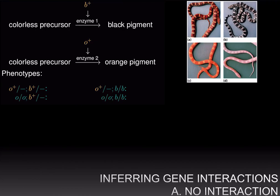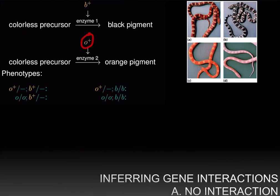To start with, let's do the simplest case when there is no interaction between the two genes. In corn snakes, the camouflage pattern pigmentation of their skin is produced by two different genes. The wild type allele of the B gene makes an enzyme that converts a colorless precursor into black pigment, and the wild type allele of the O gene converts a colorless precursor into orange pigment. These are two independent pathways, and so the genes don't interact.